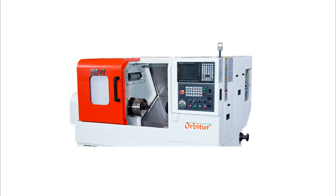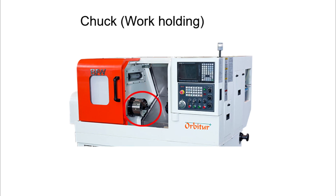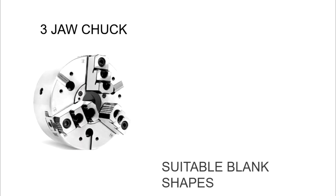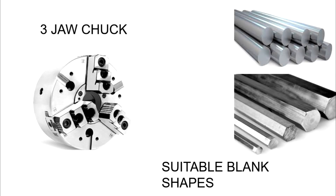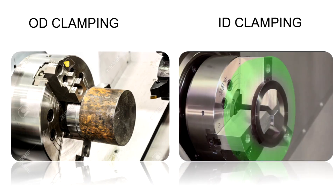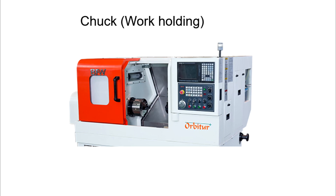The third part is the work-holding device. Normally, three-jaw hydraulic chucks are used widely for clamping the jobs. Cylindrical and hexagonal shapes can be easily held in the chuck. We can use the chuck in two modes: OD clamping and ID clamping. According to the workpiece shape and the process, other work-holding devices can also be used in CNC lathe, such as collet, faceplate, or a special fixture.